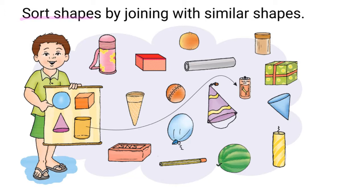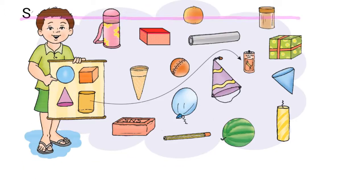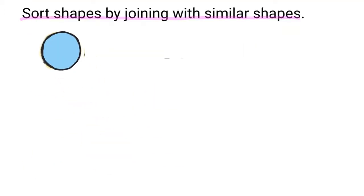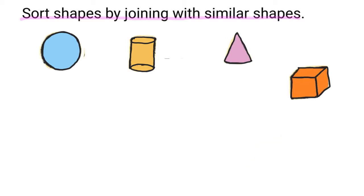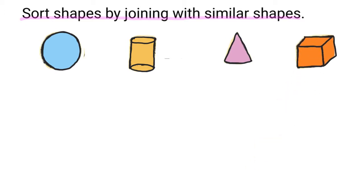Sort shapes by joining with similar shapes. The boy in this picture has four shapes — he has a circle, a square, a cylinder, and a cone. Let's sort out these objects according to their shape. The different shapes that we have are circle, cylinder, cone, and square. Let's look at our objects.